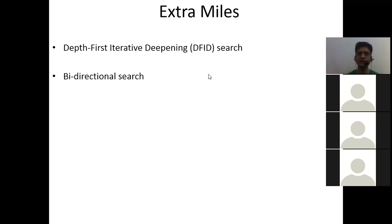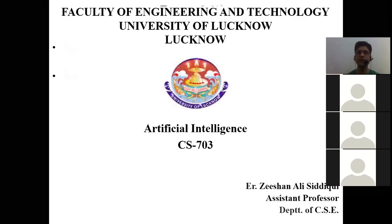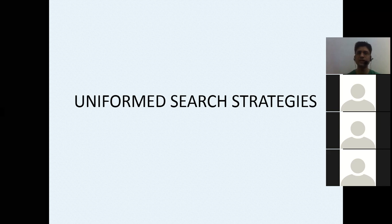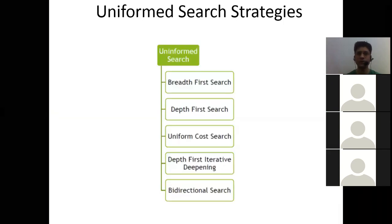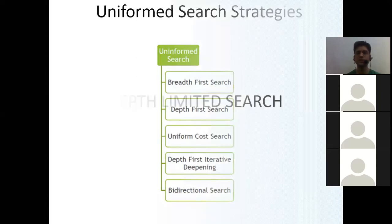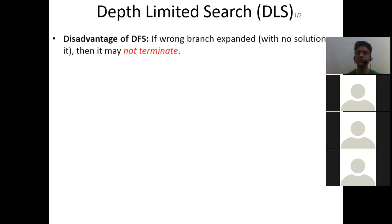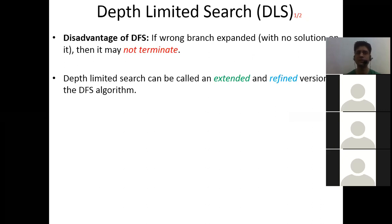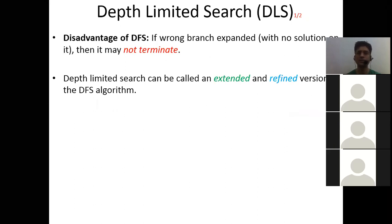To revise: today we covered uniform cost search. So breadth first search, depth first search, depth limited search, and uniform cost search — these four algorithms are more than enough for uninformed search. In depth limited search, to overcome the disadvantage of DFS, we introduced a depth limit. What we do is cut off the successor nodes of the depth limit node.